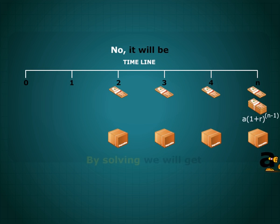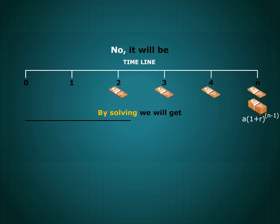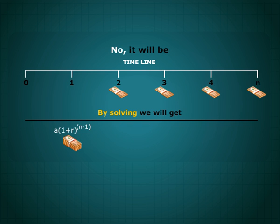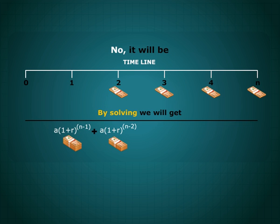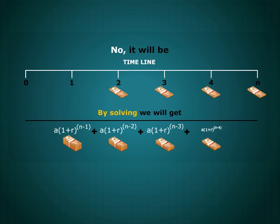The first deposit will grow for N minus 1 years. Similarly, other deposits will also grow for N minus 1 years at r percent.